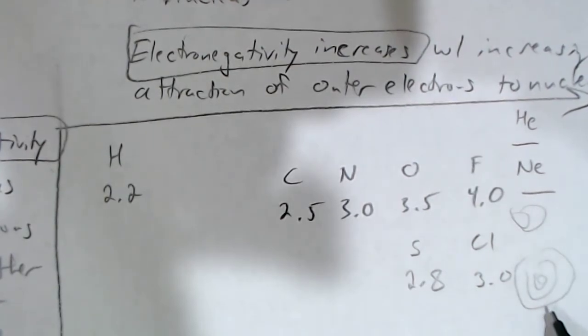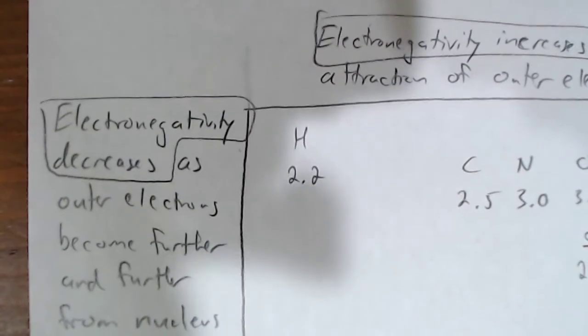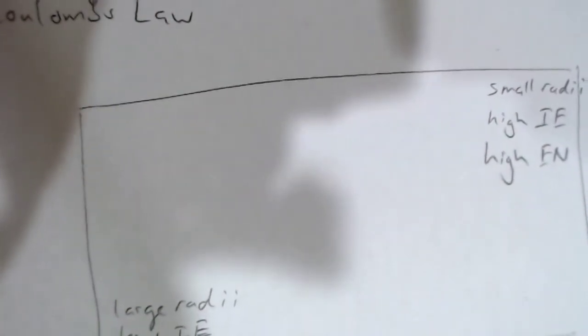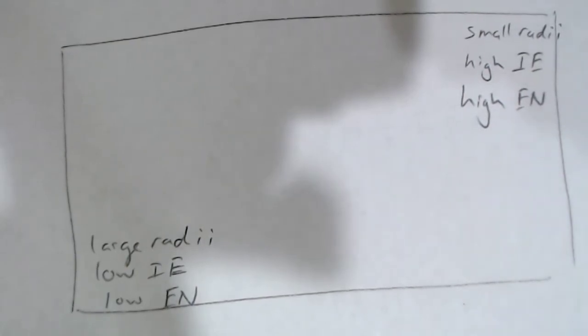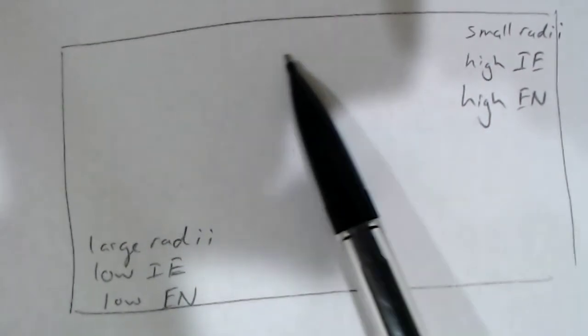Electronegativity will also go down as you go down the periodic table, as the outer electrons get further and further from the nuclei with larger and larger shells. Those outer electrons in bonds will be further from the nucleus and so less attracted to it — electronegativity decreases as you go down the periodic table. To summarize: radius gets larger as you go down, and smaller as you go to the right. The smallest radii elements are in the top right, and the largest radii elements are in the bottom left.